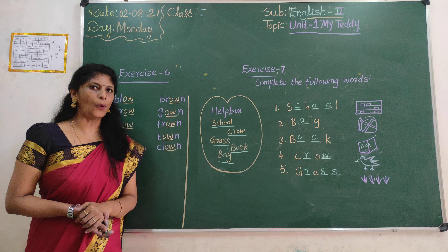Next is exercise 7, children. Complete the following words. Fill in the box with the right answer. First one — what is this word? School. What is the spelling of school? S-C-H-O-O-L, school.